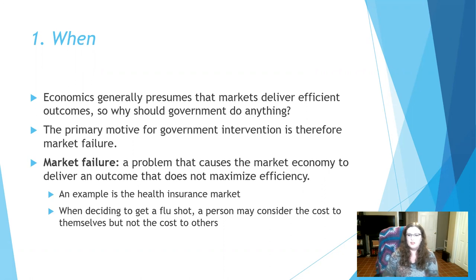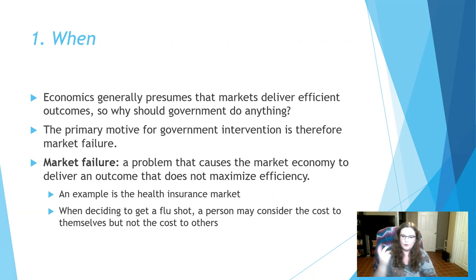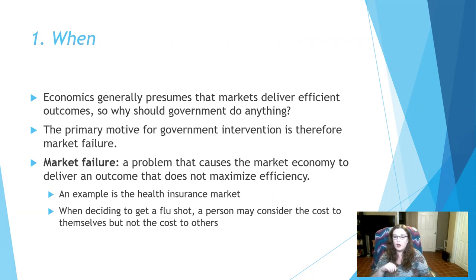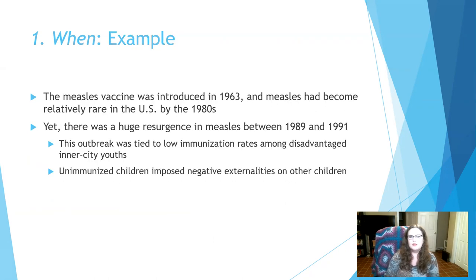Consider the health insurance market — health insurance across the entire world is very different. When deciding to get a flu shot, you're not necessarily considering that if you get the shot, 12 people around you won't get the flu. You're just thinking about lessening your own chance of getting sick. You may not be factoring in that this saves 12 other people. When private calculations and social benefits don't correspond, that's the idea of a market failure.